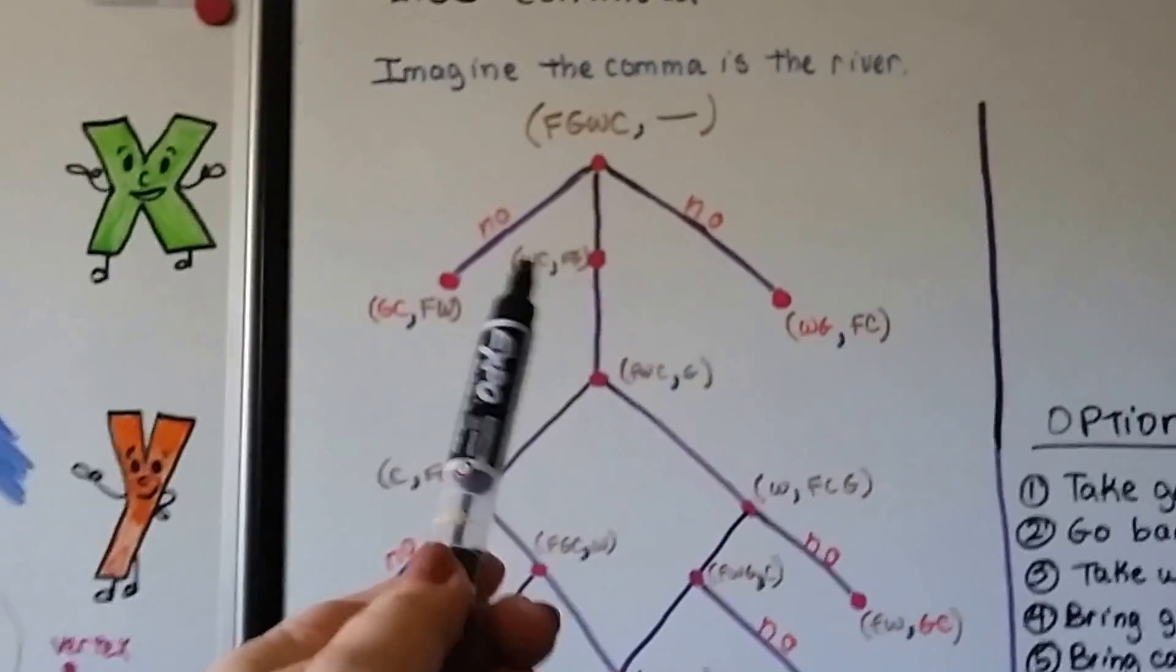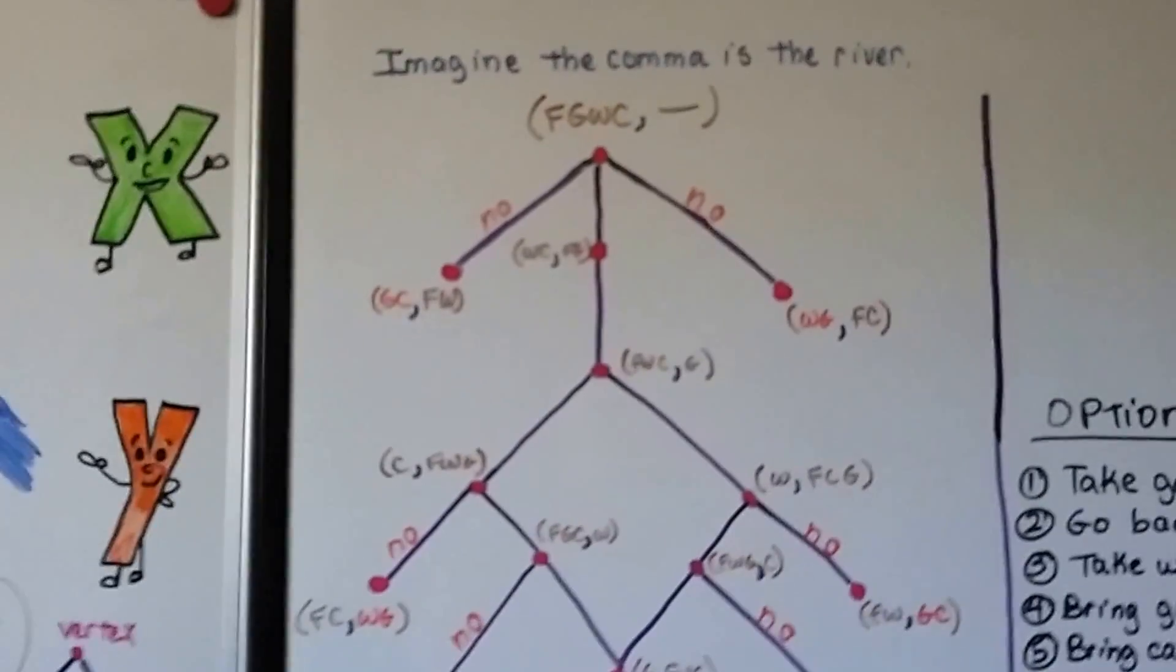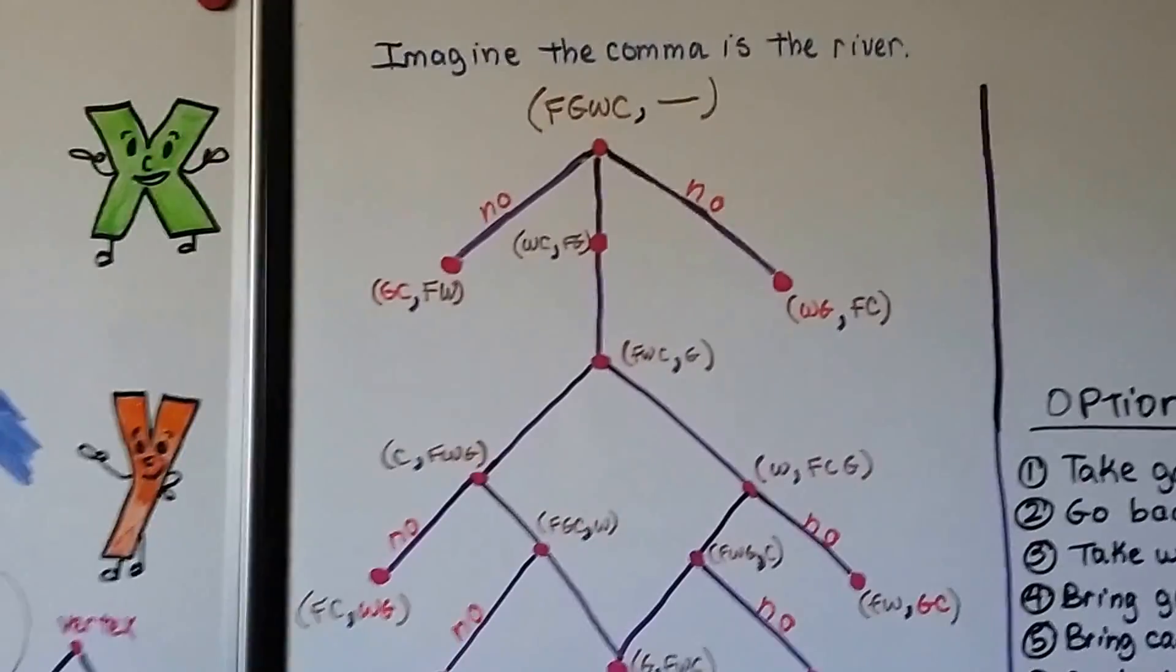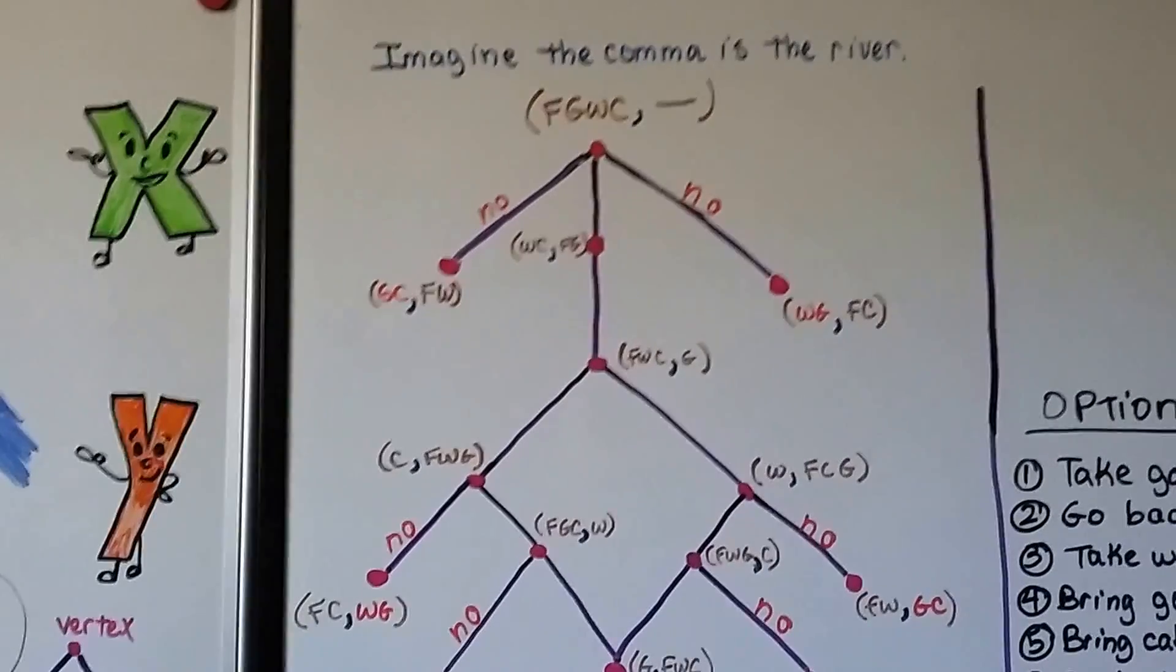So let's come down the middle. The farmer will bring the goat over and leave the wolf and the cabbage together. That will work because the wolf is not going to eat the cabbage.